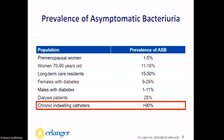How common is ASB exactly? It's common to find bacteria in the urine in patients without symptoms, particularly residents of long-term care facilities, patients on dialysis, and elderly patients. Additionally, bacteria is almost always present in patients with chronic indwelling catheters. So we should never be getting UAs and cultures on these patients when they are not presenting with symptoms, as any foreign matter introduced into the body provides bacteria a great medium for growth and biofilm formation.